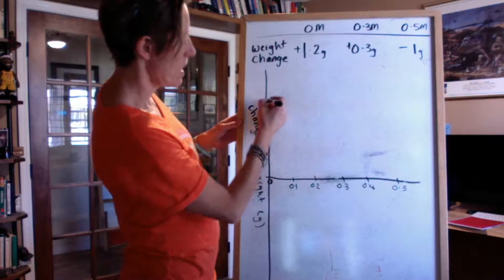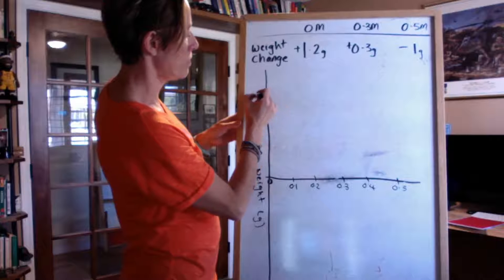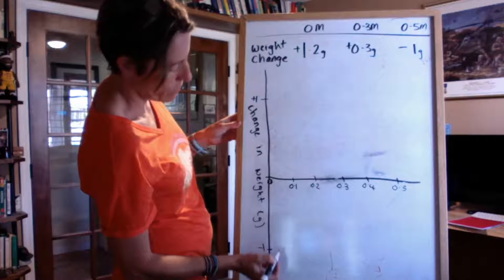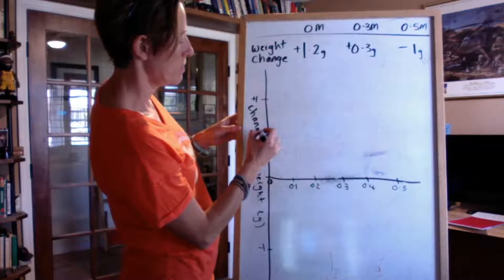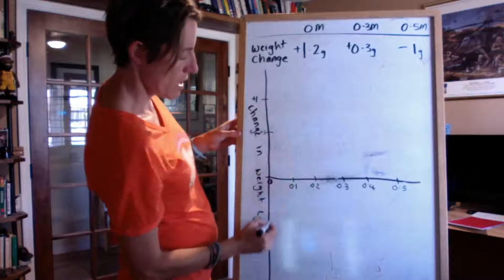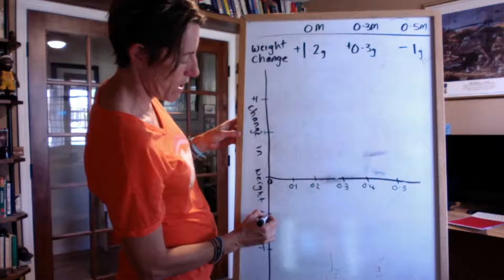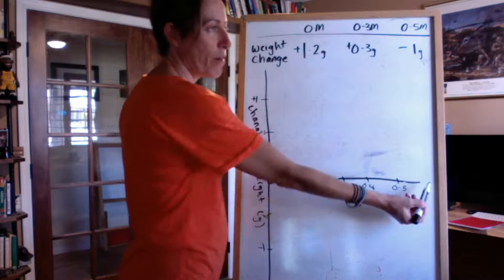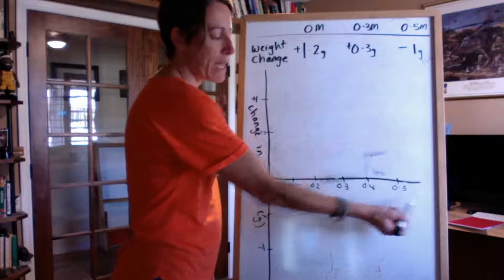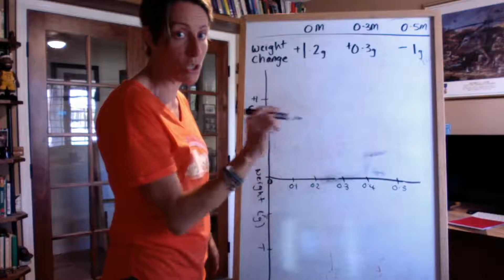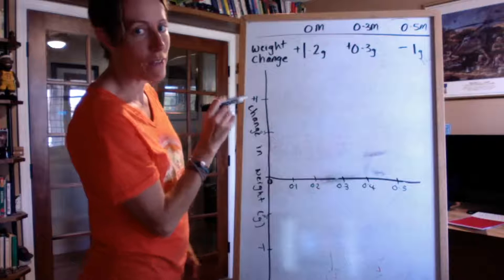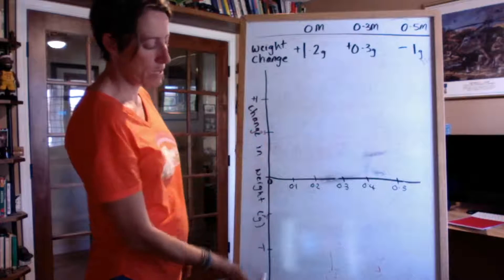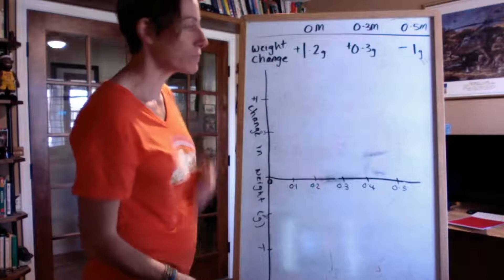So here I'm going to put plus 1 gram. And here I'm going to put minus 1 gram. So this is going to be plus 0.5. And this would be minus 0.5. All right. So that's my graph set up. I've got my independent variable here spaced out nicely. I should have labeling units. I don't have them, but you should. And you draw your graph. And here's my change in weight with units. And then I've got my positive numbers and my negative numbers spaced out evenly up and down here.